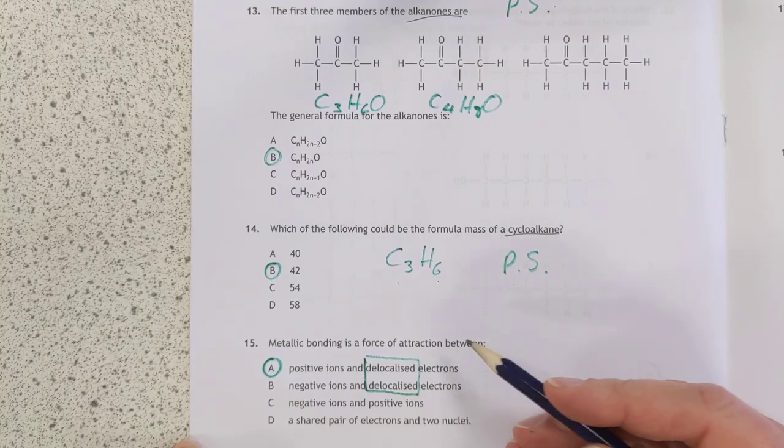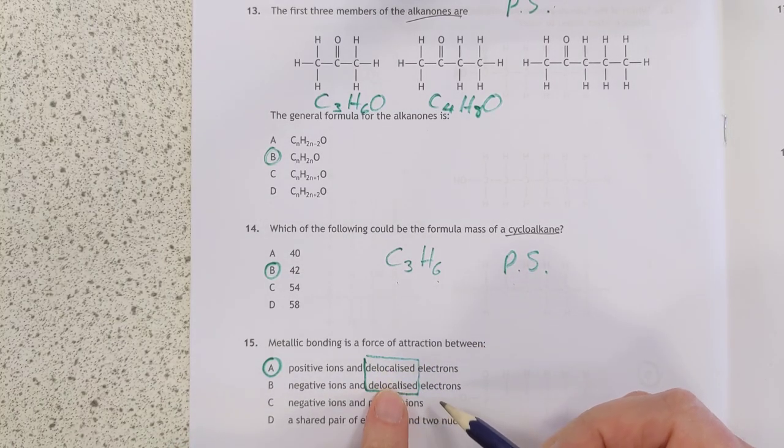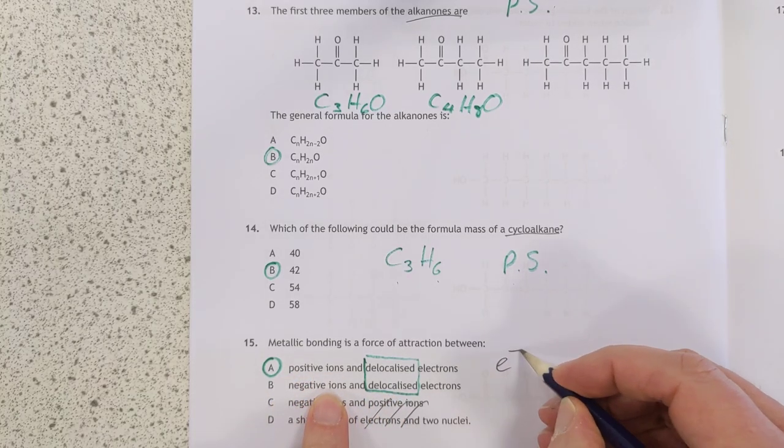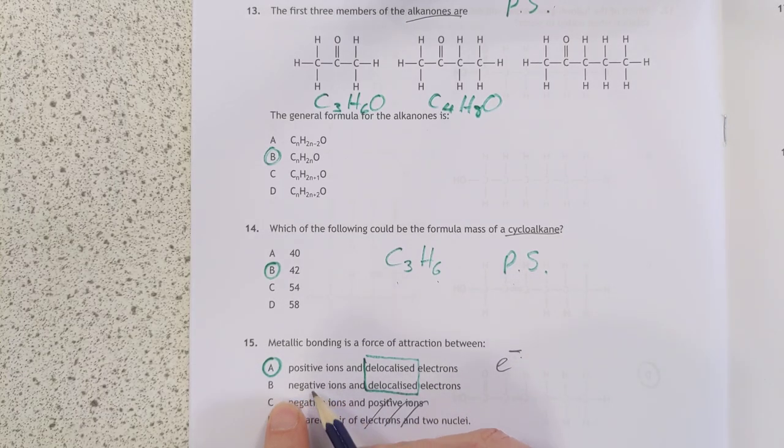Metallic bonding. It always involves delocalized electrons. So we can chuck these two answers. The only question is, is it positive ions or negative ions? Well, since the electrons themselves are negatively charged, negative ions are not going to stick to these. So it's positive ions.